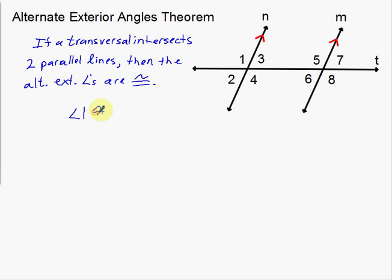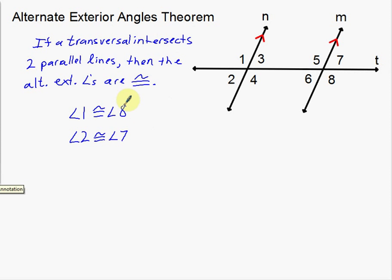Angle 1 is congruent to angle 8. And then also, angle 2 and angle 7 is the next one. Angle 2 is congruent to angle 7. So those are the congruent exterior angles. This only happens if a transversal intersects two parallel lines — a transversal goes through two parallel lines.